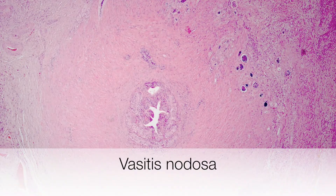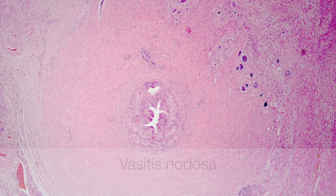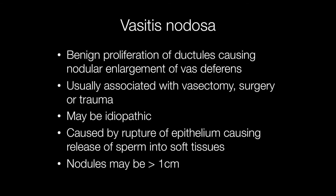Here is an example of vasitis nodosa. Vasitis nodosa is a benign proliferation of ductules causing nodular enlargement of the vas deferens, and the nodules may be as large as one centimetre in diameter.